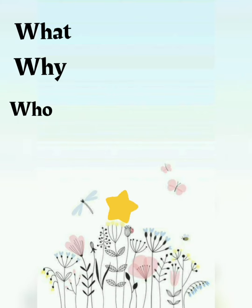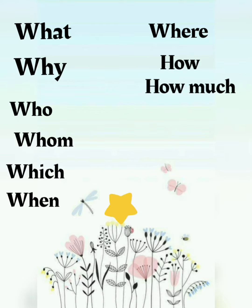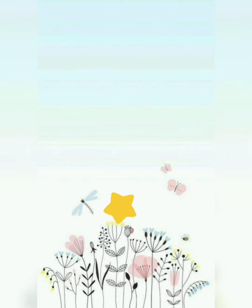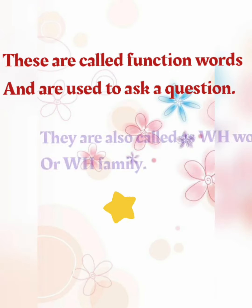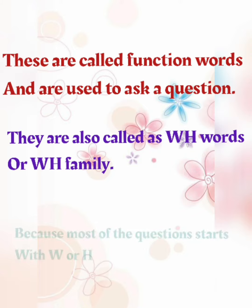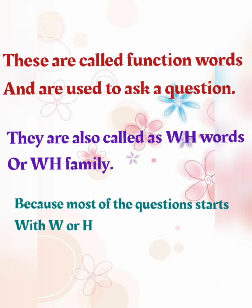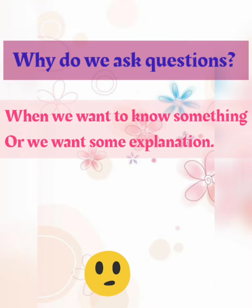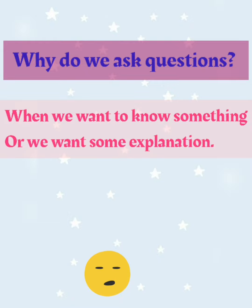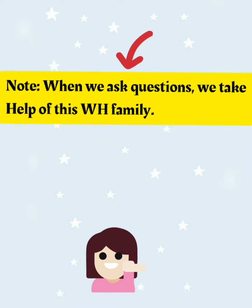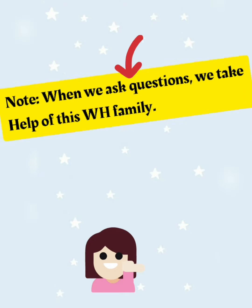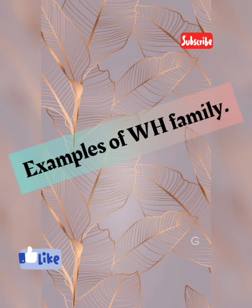What, Why, Who, Whom, Which, When, Where, How, How Much, How Many, How Long. These are called function words and these are used to ask a question. They are also called WH words or WH family because most of the questions start with W or H. Why do we ask questions? When we want to know something or we want some explanation, we ask questions. When we ask questions in detail, we take help of these WH family. Let's see some question words belonging to WH family.